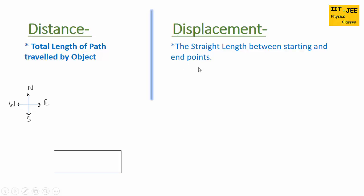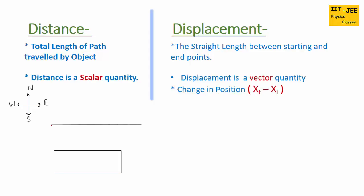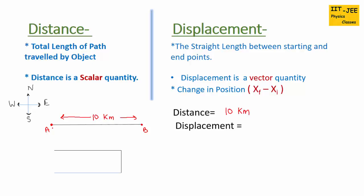Let's take an example. Suppose a person starts from point A and travels to point B, travelling 10 km. So the length of the path traveled by the object is the distance — here distance would be 10 km. Now we have to find the displacement. Displacement is the straight length between starting and end point, so we figure out that A is the starting point and B is the ending point. The straight length between them is 10 km.